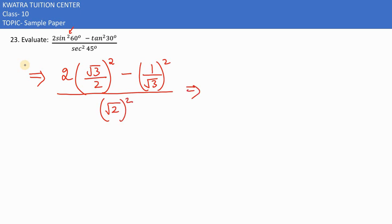Now first of all, we will simplify it. 2 is there. This is root 3 square would be 3. And in denominator, you will have 4. And then you would have 1 over 3.